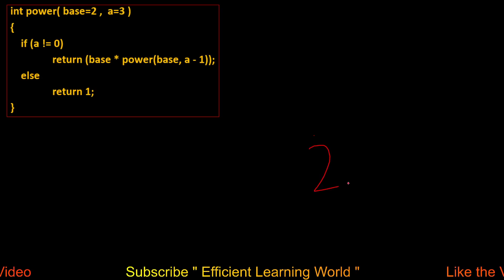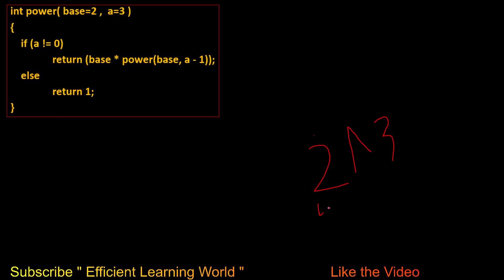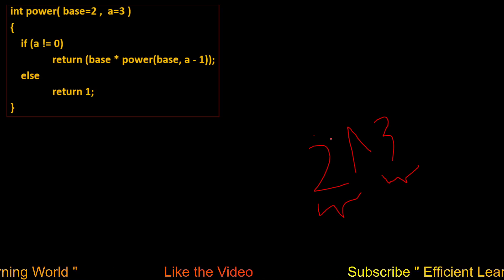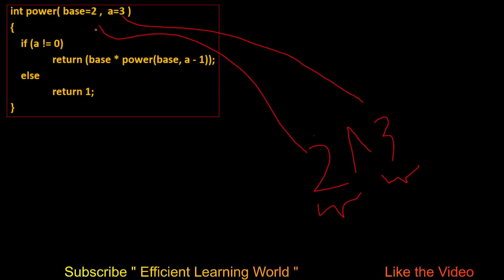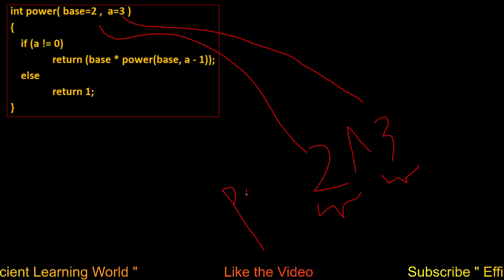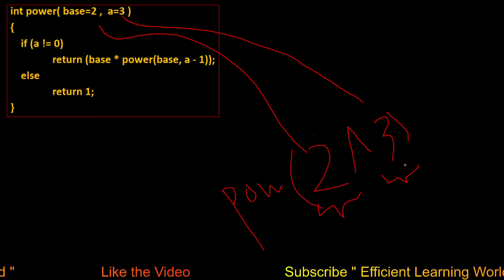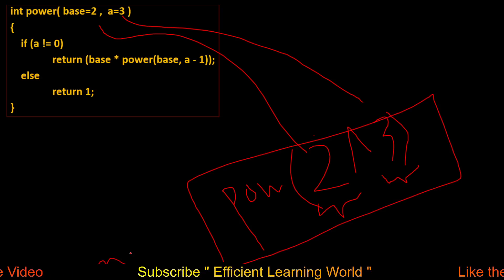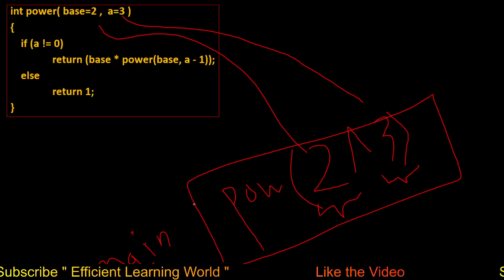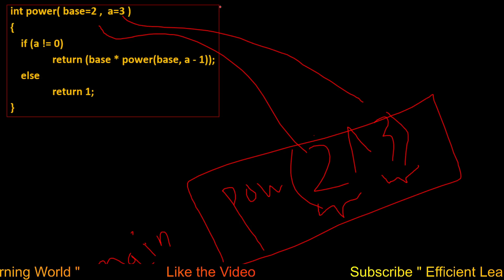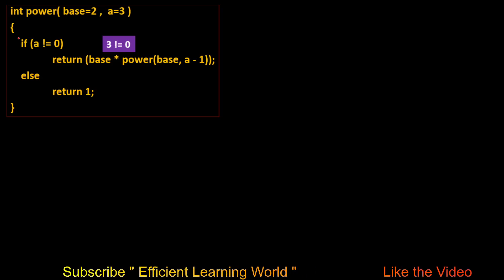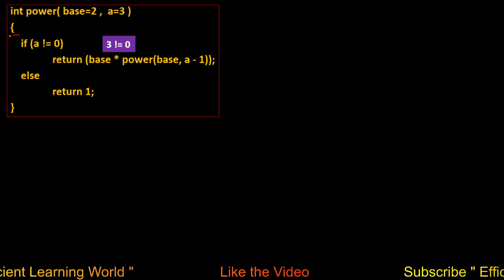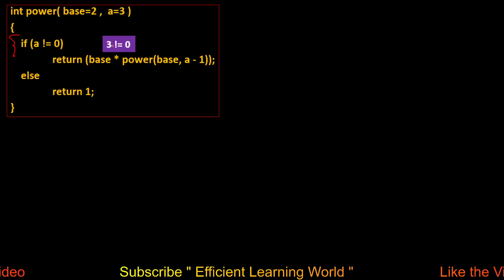Suppose I want to calculate 2 raised to power 3. Base=2, power=3. These are stored in variables: 2 in the base variable and 3 in the variable 'a'. We call the function from main. The compiler enters the function body and checks the termination condition: is 'a' not equal to zero? Since a=3, and 3≠0, the condition is true, so the if body executes.